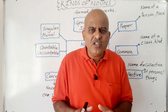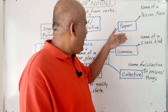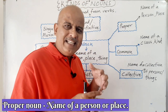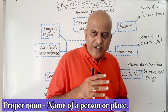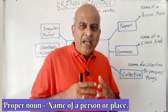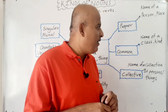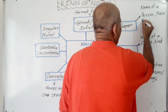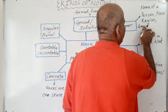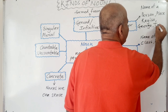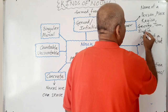Let's understand the difference between them and how we can identify them. Proper noun, as the name suggests, is the particular name of a person or of a place. For example, Ganesh, Ramesh, India, Kagisu, Brian, George, Tom — these are the proper names.